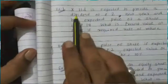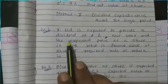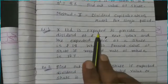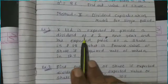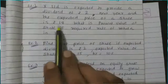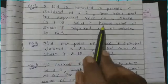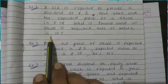First sum: X Limited is expected to provide a dividend of Rs. 2 next year. The expected dividend D1 is Rs. 2, and the expected price of the share P1 is Rs. 18. What is the present value of the share if the required rate of return is 12%?